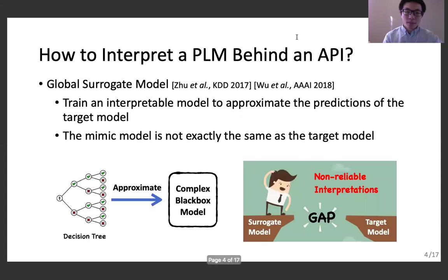So, how do we do the interpretation task? There are two typical methods. The first one is to train an interpretable global surrogate model. For example, we can train a decision tree to mimic the behaviors of the target model. So, by analyzing the decision tree, we can understand the behaviors of the target model. Intuitively, this idea sounds good.